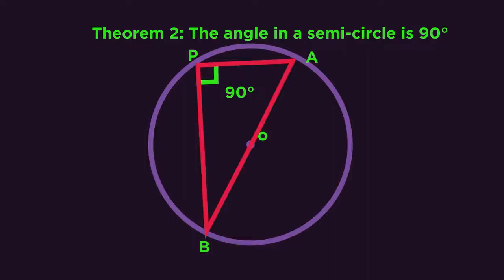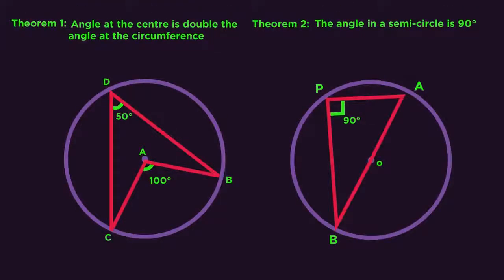Just make sure though that it really is the diameter. So it needs to cross through the centre. By the way, the number doesn't actually matter. Theorem two isn't necessarily the semicircle theorem. It's just the order that we're discovering them in this video.